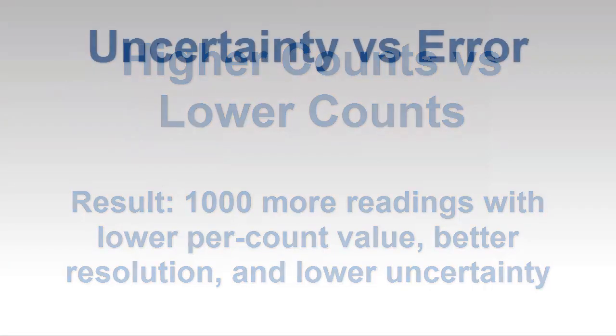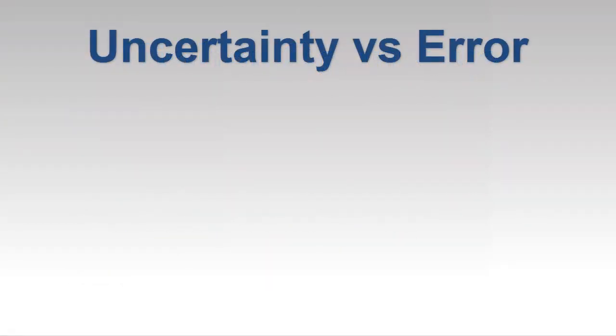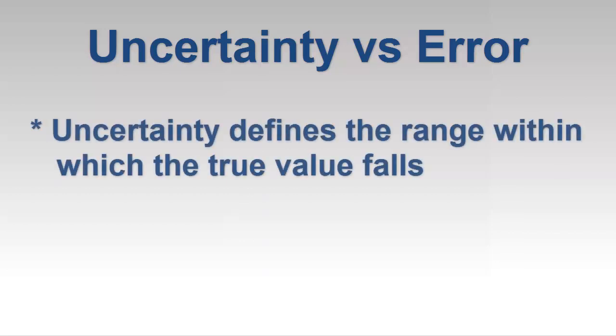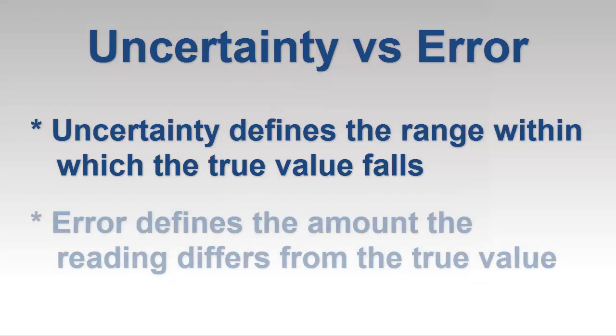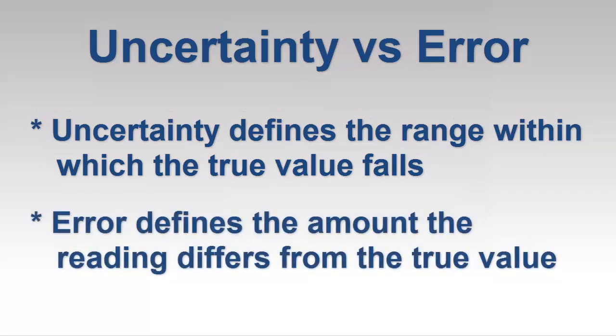Before leaving this topic, we should point out the difference between uncertainty and error. Although the terms are sometimes used interchangeably, uncertainty represents the range within which the true measurement falls, while error defines the absolute amount that reading differs from the true value. Although it may seem initially counterintuitive, it would be easier to accommodate error than uncertainty, as all we would need to do is offset the measurement by the amount of the error to obtain 100% accurate results.